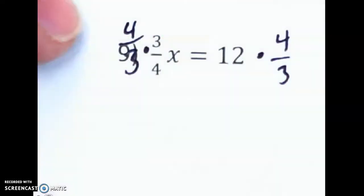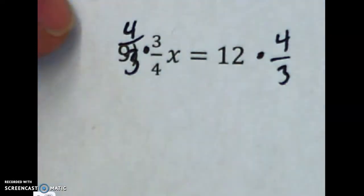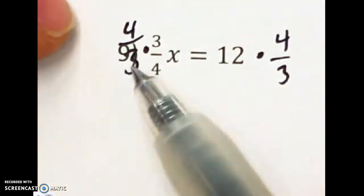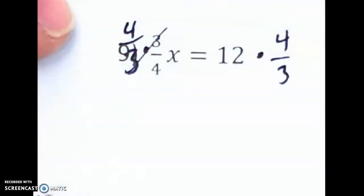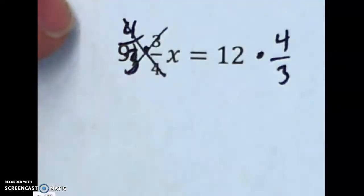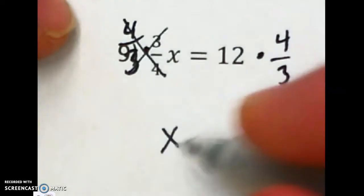Sorry, the number 9 is in the way, but I'm going to write right over it. Here's what that does. It multiplies by 3 and divides by 3, and those 3s cancel. The 4 is multiplying and the 4 is dividing, so they cancel. And we're left with just x on the left.